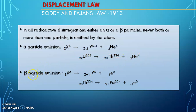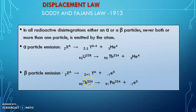When a beta particle is emitted, we can see that the mass number remains unchanged — the mass number is unaffected by beta particle emission — whereas the atomic number is increased by 1. Here also, we have provided an example of thorium: when it is emitting a beta particle, mass number remains 234, protactinium also has mass number 234, whereas the atomic number 90 becomes 91.